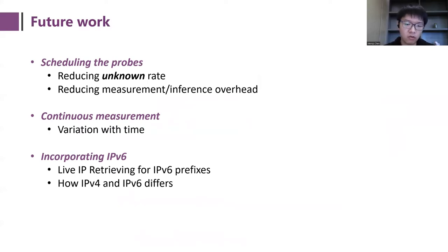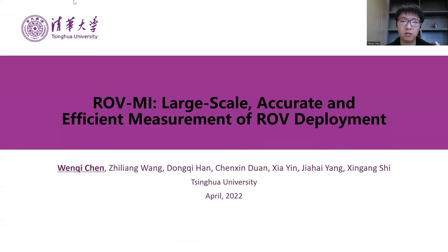Finally, for future work, these problems can be considered. First, we can schedule probing in the data plane to reduce unknown rate or generate less useless paths to reduce overhead. Also, continuous measurement and incorporating IPv6 are also worth considering in the future. Well, this is my talk. Thanks for listening.